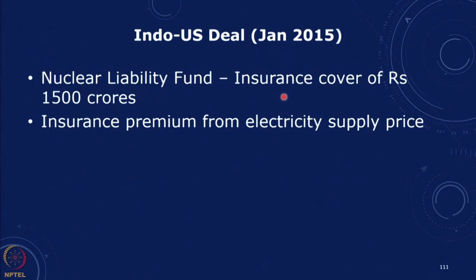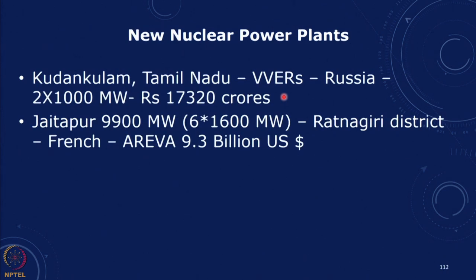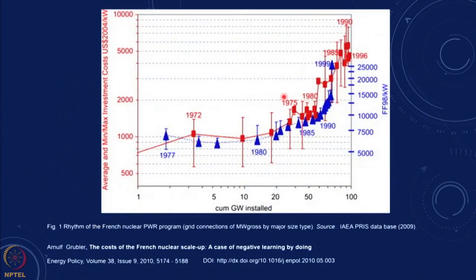The Indo-US deal idea was that there is a nuclear liability fund with an insurance cover, and the insurance premium will come from the reactor supply price, which means it will result in an increase in electricity cost. Recent plants in India include Kudankulam in Tamil Nadu at 2,000 megawatts for about 17,000 crores, and Jaitapur in Ratnagiri district (France) at about 9.3 billion US dollars — fairly high in terms of cost.